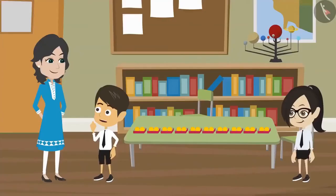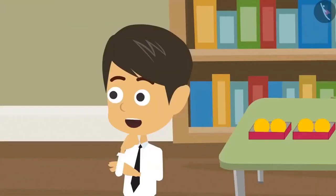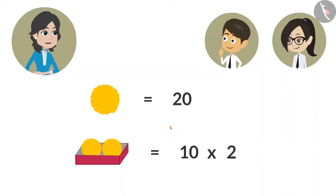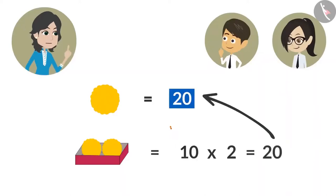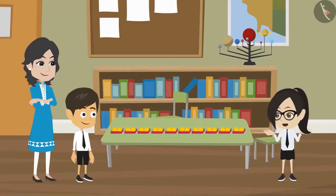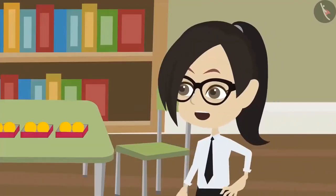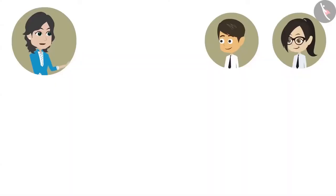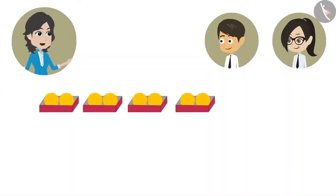How could you find out so soon, madam? We have been counting for a very long time. It's easy. I have multiplied two with the number of boxes. So I got to know that there are 20 ladoos in 10 boxes. But why did you multiply? We are adding them together to find the total number of ladoos.